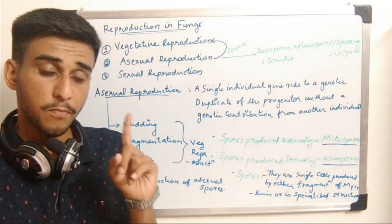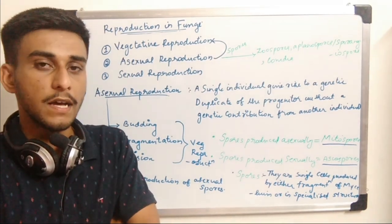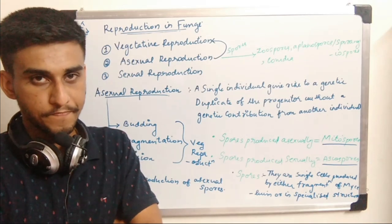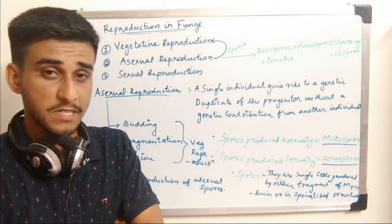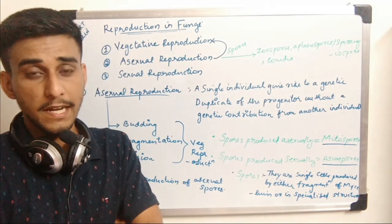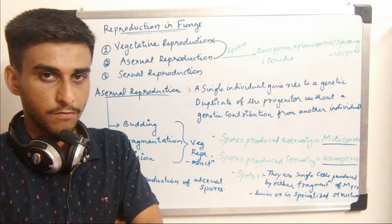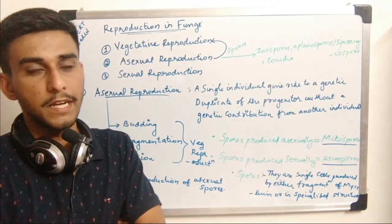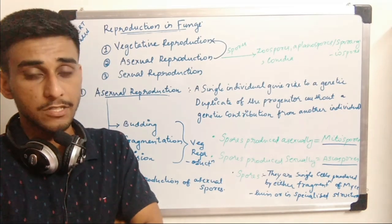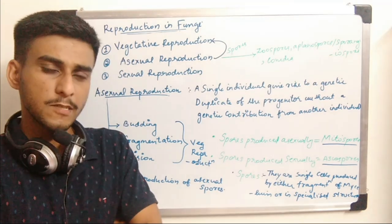Fungi are cosmopolitan in nature, which means they can be seen everywhere. The spores are seen everywhere in the environment — spores can be dispersed in water, seen in air, in soil, or attached to some other organism.